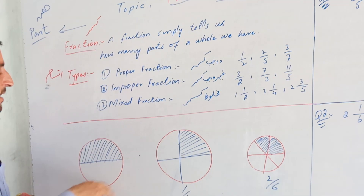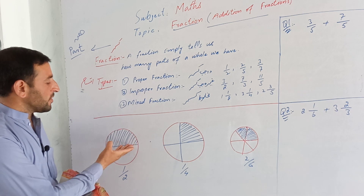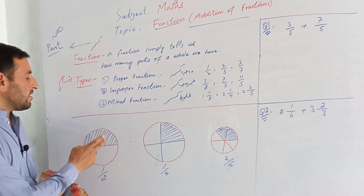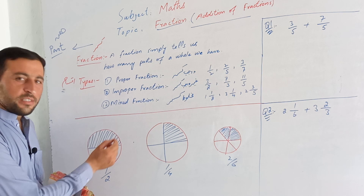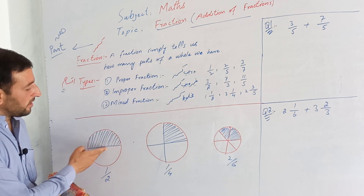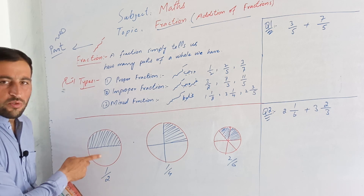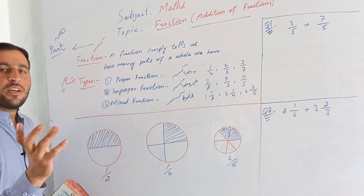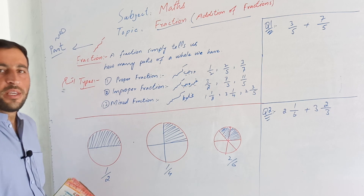If you have a large size, it is written in a specific form. There are two sides: one side and the other side. The shared part is one size and the unshared part is the other size. At this point, there are two types.